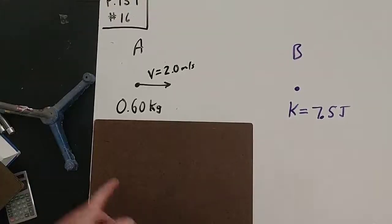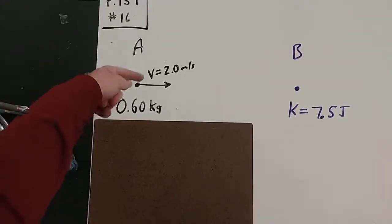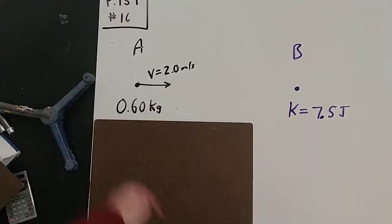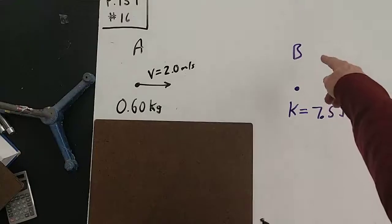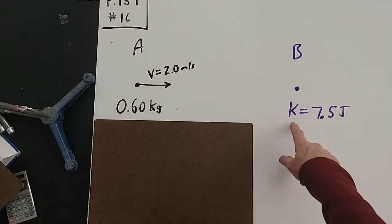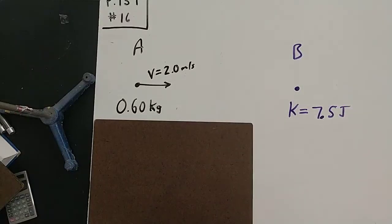Okay, so there are my diagrams. I said, okay, at some point A, I know it's got a velocity of 2 and a mass of 0.6 kilograms, and at some other point B, it has a kinetic energy of 7.5.